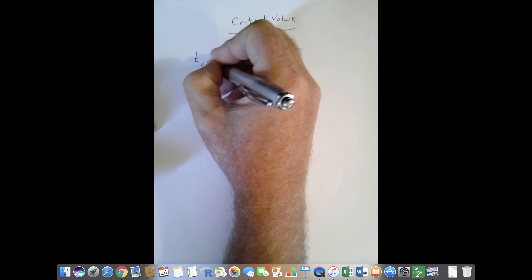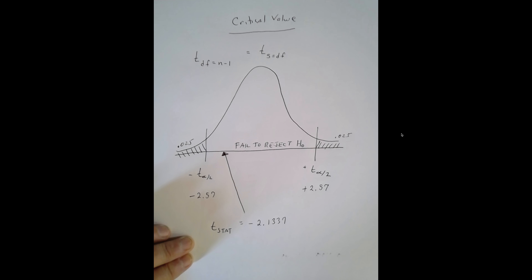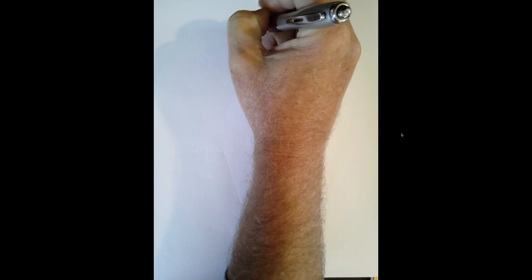Our t-statistic of -2.1337 falls to the right of -2.57, so it resides inside the bounds of the critical values. Although the supplement did seem to lead to weight loss for four of the six participants, we do not have statistical significance. We can't generalize from these six people to indicate weight loss for the population of obese males. From the critical value approach, we fail to reject the null.